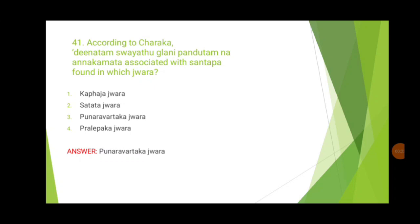The 41st question: according to Charaka, 'dhina dam shavadur glani pandudam na annakamada associated with sandhava' is found in which jvara? The options are khabaja jvara, sadada jvara, punaravartaga jvara, and pralepaga jvara. This is a direct reference from Charaka Chikitsa, third chapter — Jvara Chikitsa — and it indicates punaravartaga jvara.